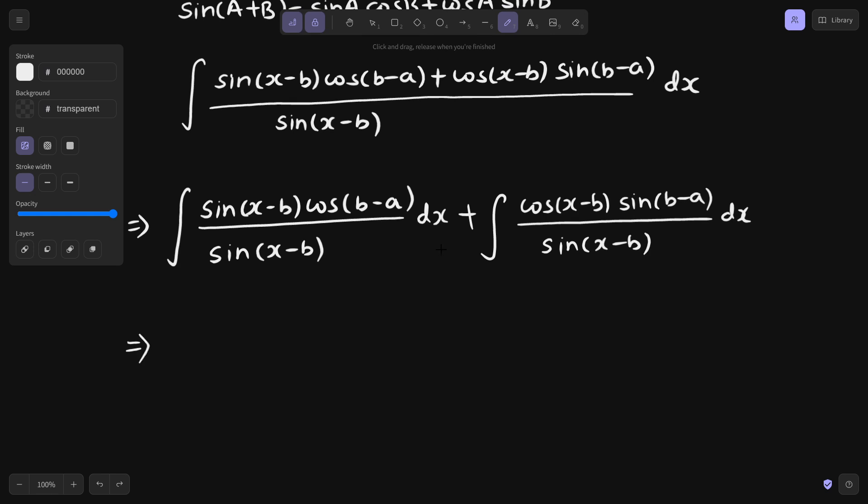So this can be cancelled, cos b minus a is left. Cos b minus a is a constant, so that can be taken out, inside we are left with just integral of dx. Plus here, as you can see, cos by sin will give us cot, and again in this case also sin b minus a is a constant, so it can be taken out. Inside we are left with integral of cot x minus b.